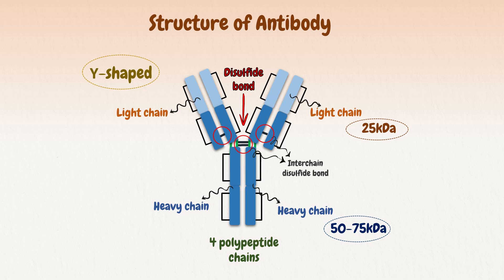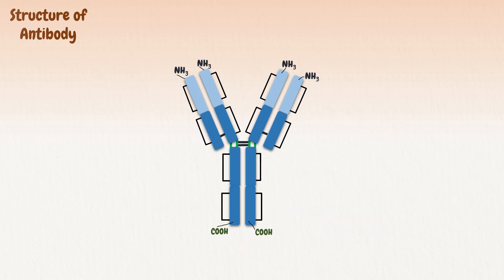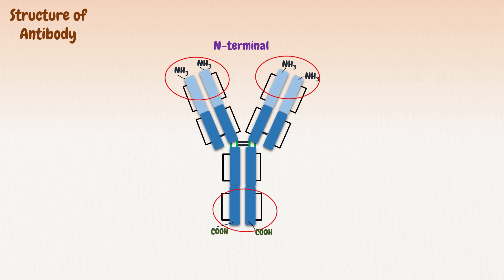Intra-chain disulfide bonds are also present within heavy and light chains, providing strength to the chain structure. Each chain has two terminals: one having an amino group at the end is called the N-terminal, and the other terminal ending on a carboxyl group is called the C-terminal.